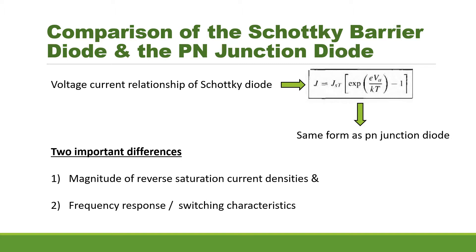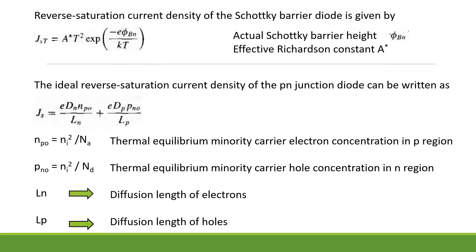But there are two important differences between Schottky barrier diode and P-N junction diode. The first one is the magnitude of reverse saturation current density, and the second one is the difference in frequency response or switching characteristics.